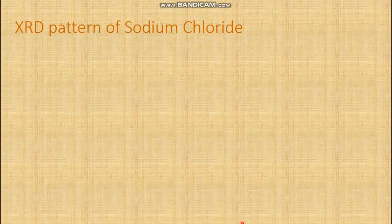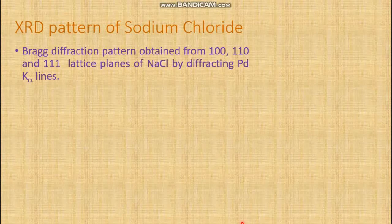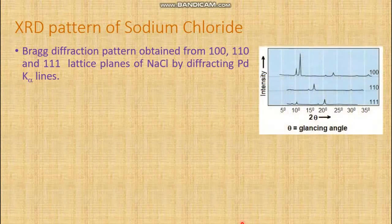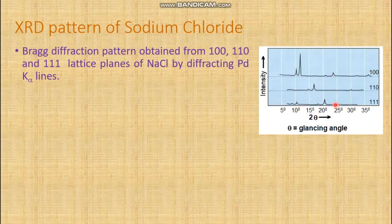Let's have a look at the XRD pattern of the sodium chloride crystal. The Bragg diffraction pattern obtained from the 100, 110, and 111 lattice planes of sodium chloride by diffracting palladium Kα lines is as follows. If 2θ is plotted on the x-axis and corresponding intensities on the y-axis, we find one peak for the 100 plane at around 2θ = 11.8°, a second peak around 24°, and a third peak around 36 to 37°. There is one peak for the 110 plane and one peak for the 111 plane.